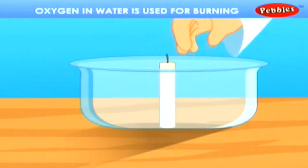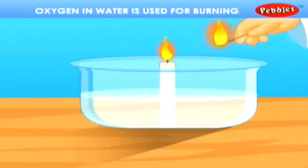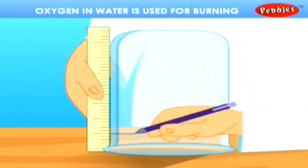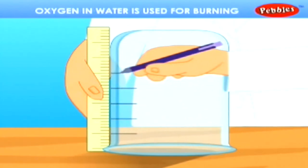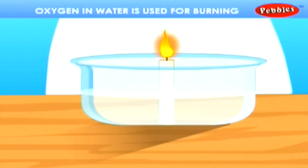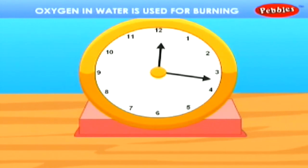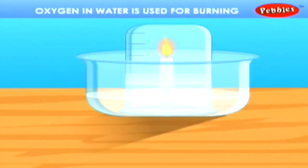Take the shallow tray and fix the candle in it. Fill water in the tray. Light the candle. Take a glass. Mark it into five equal parts. Invert the glass over the lighted candle. Observe what happens to the candle. What happens to the water in the tray? Why does water rise in the glass?